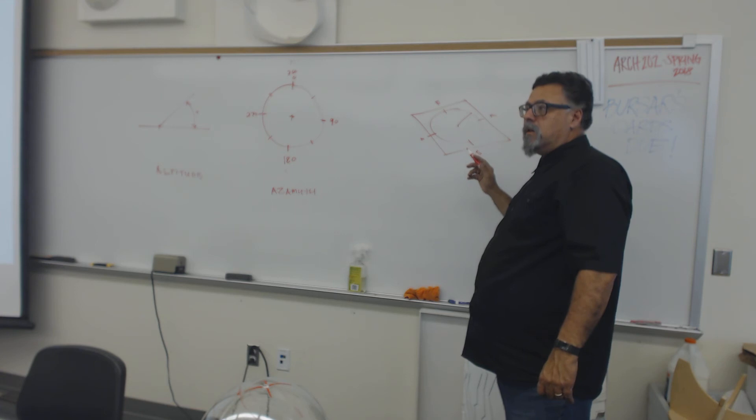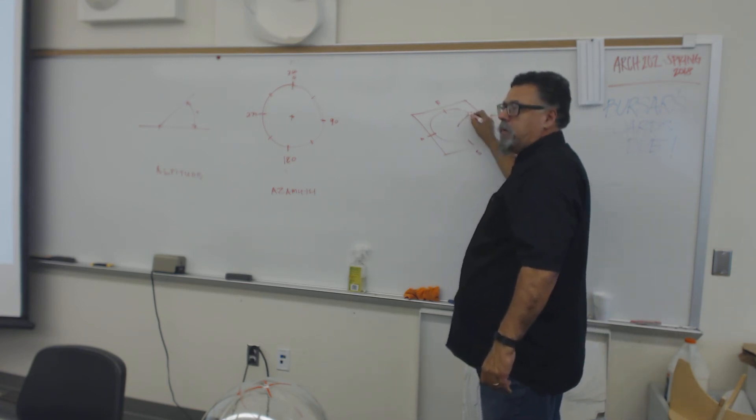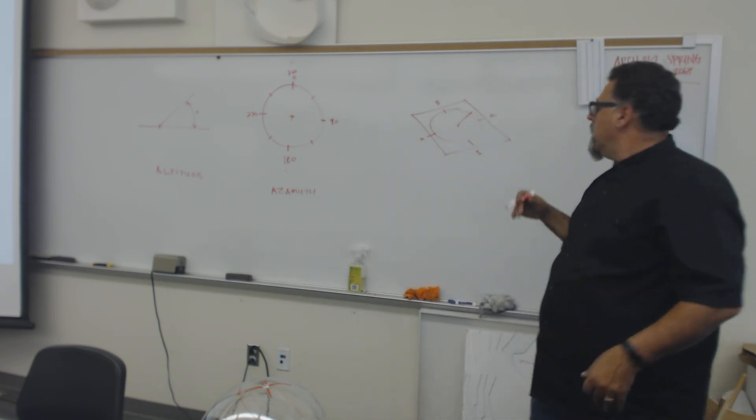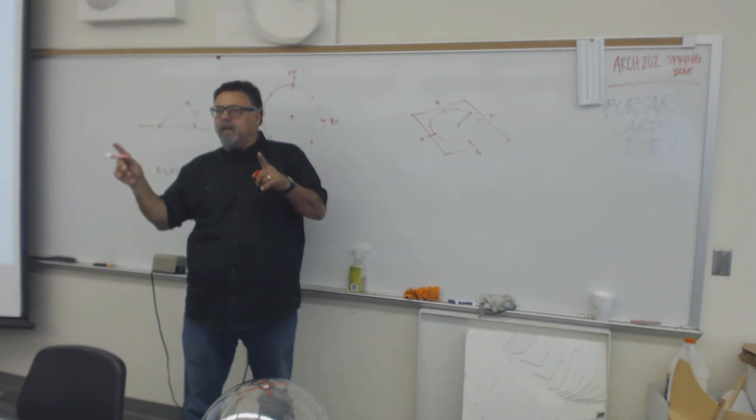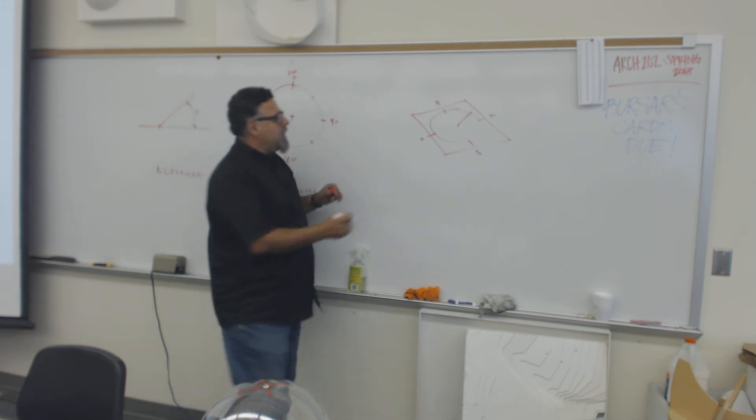Now what's the altitude? Zero. So the sun, there's no angle up. Now let's take a look at it later in the day. Later in the day, at solar noon, what did I say? The azimuth of the sun will always be at solar noon anywhere? 180. 180 degrees. So azimuth is here.